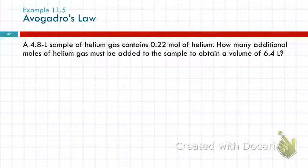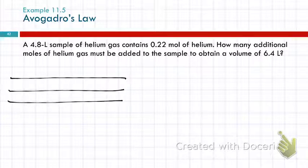Let's do an example here. A 4.8 liter sample of helium gas contains 0.22 moles of helium. How many additional moles of helium gas must be added to the sample to obtain a volume of 6.4 liters? This one's actually a little trickier than it may appear, but we'll just follow our same approach.